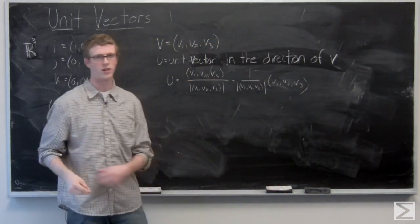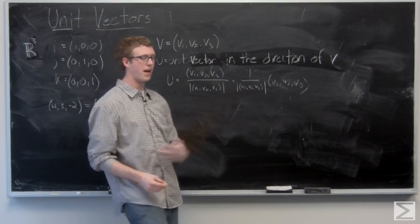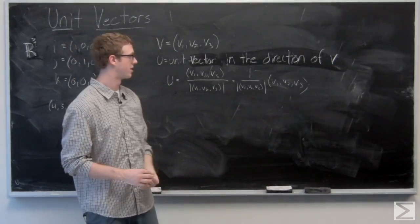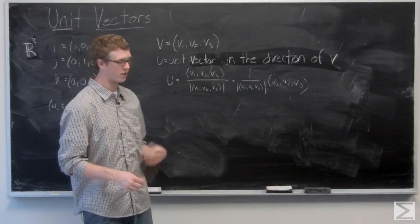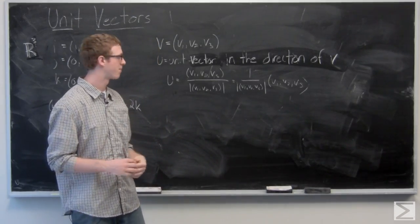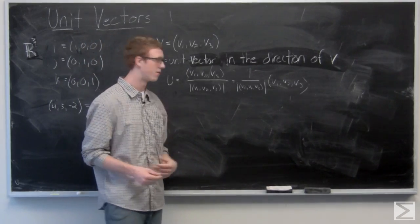So the unit vector in the direction of v is 1 over the magnitude of v times the vector v. The resultant is going to be a unit vector. We're going to take a look at an example here so we can see how that plays out with real valued vectors.